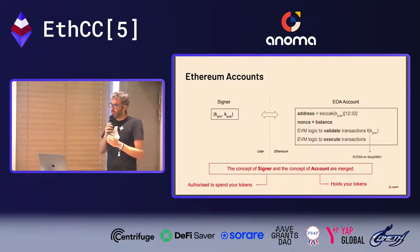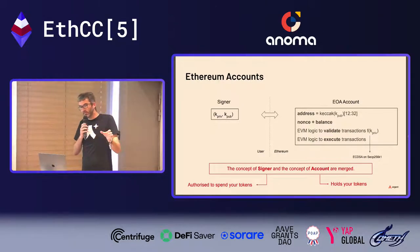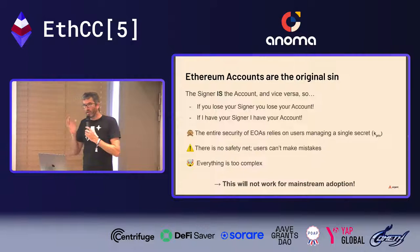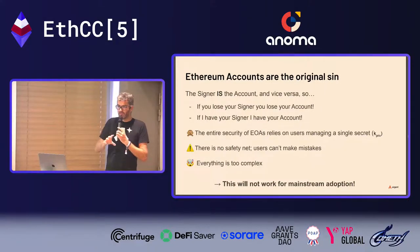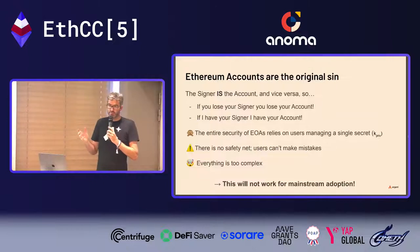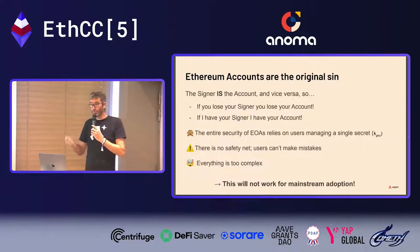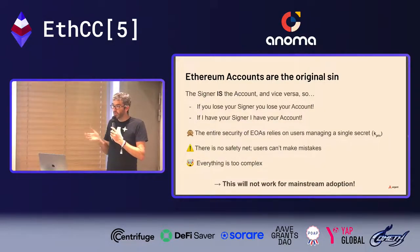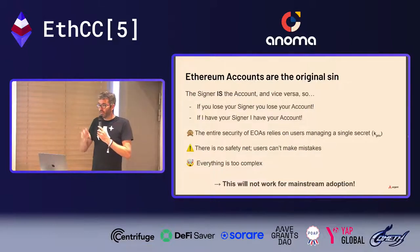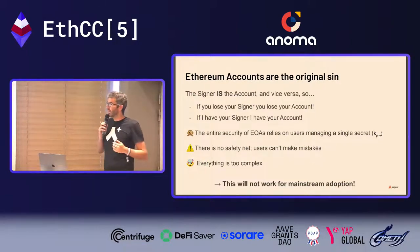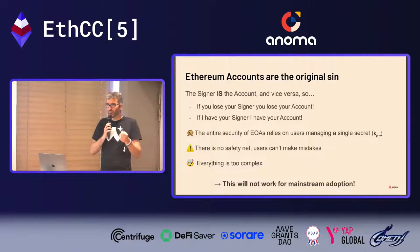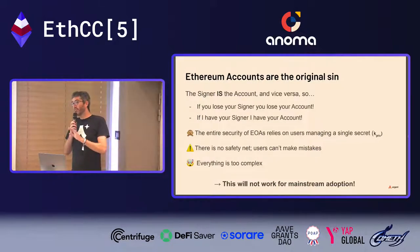This coupling isn't a necessary condition — the signer should just be there to authorize transactions. But on Ethereum they are two sides of the same coin. Because the signer is kind of the account, if you lose your signer you lose everything. If someone has your signer, they have everything. On Ethereum, the entire security relies on users protecting a single secret at all costs.